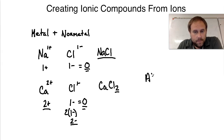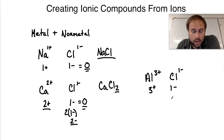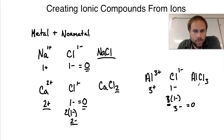Let's use aluminum as another example. Aluminum has a typical charge of 3+, and chlorine has a charge of 1−. I need three chlorines at 1− each to get 3−, and 3+ plus 3− equals zero. So I need one aluminum and three chlorines, giving us AlCl₃.